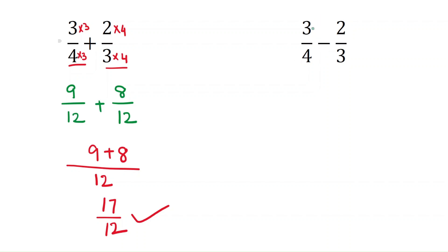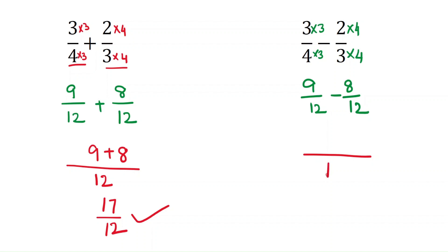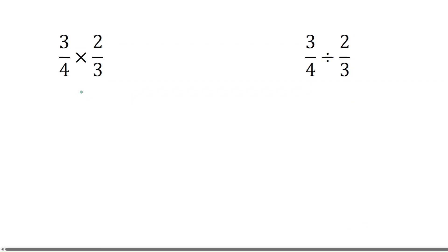For subtraction, first convert the fractions to have a common denominator. Multiply 3/4 by 3/3 and 2/3 by 4/4. This gives 9/12 − 8/12. Taking 12 as the common denominator, we get 9 − 8 = 1, so the answer is 1/12.